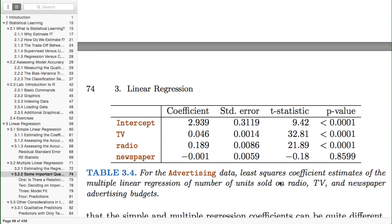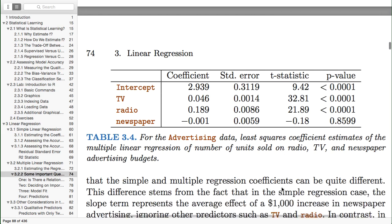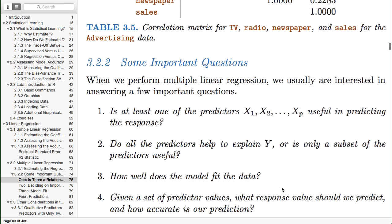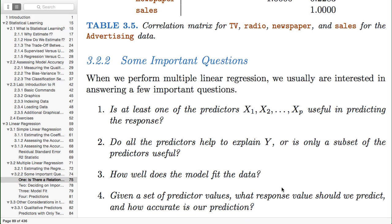This gets into some questions we need to answer about multiple linear regression. Let's look at those questions and then we'll answer them. Is at least one predictor useful? We'd like to make sure at least one of these predictors is making a difference. Do all the predictors help or is there some subset that helps? How well does this model fit the data? And finally, given a set of predictor values, what response value should we predict and how accurate can we expect our prediction to be?